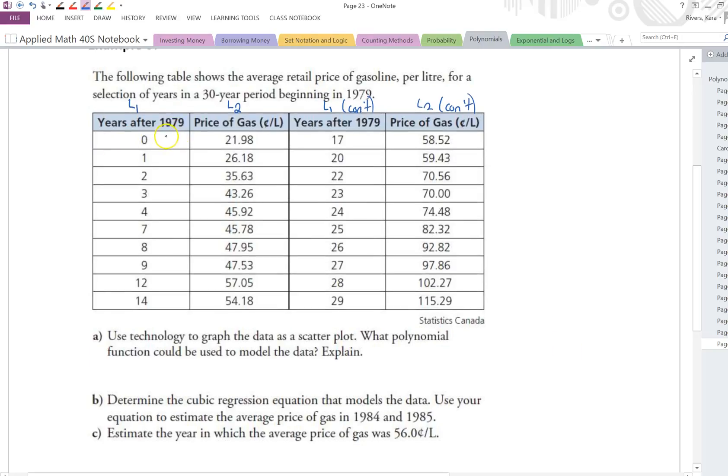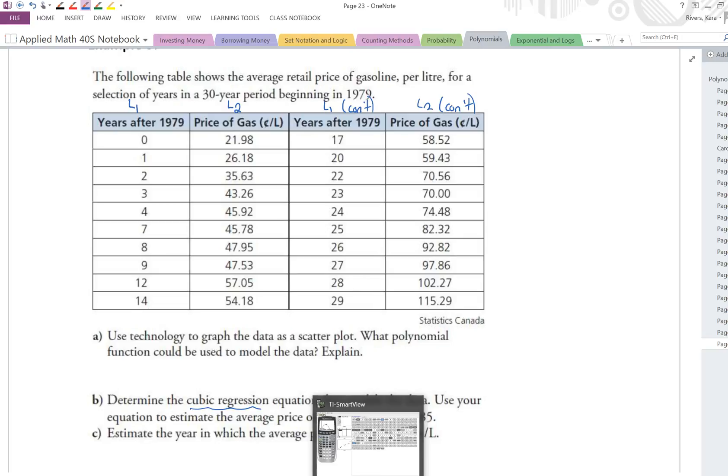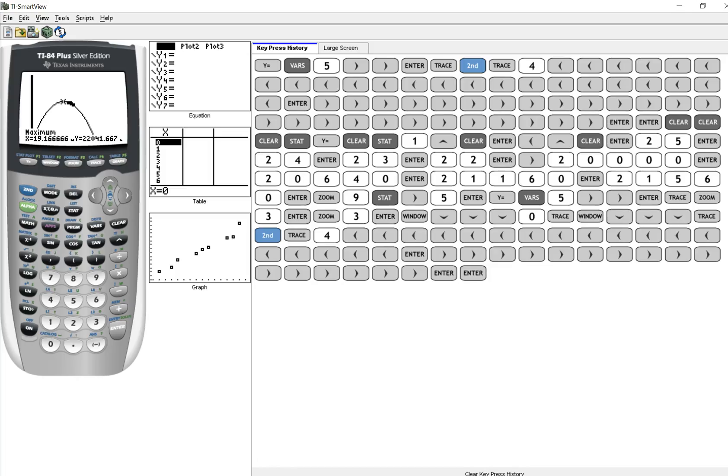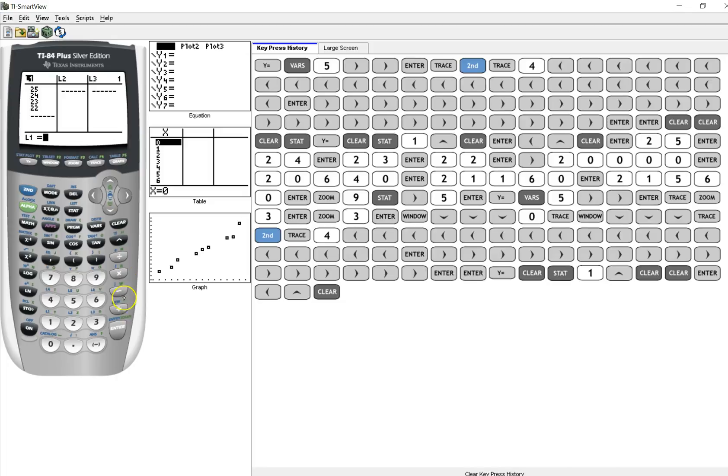So what is this example even asking us? It says the following table shows the average retail price of gasoline per liter for a selection of years in a 30 year period beginning in 1979. So we can see years after 1979 so when they say 0 that is 1979 when they say year 1 that's actually 1980, year 2, 1981 and so on. And it doesn't go, it goes 1, 2, 3, 4, 7, 8, 9, 12, 14, it's not all in order but like 20 means 20 years after 1979 so that would be year 1999, so when you're figuring this out make sure you keep that in mind. Use technology to graph the data as a scatter plot. What polynomial function could be used to model the data and explain why. Let's clear out what we have here for our quadratic. Stat 1, clear that out, and now we're at a point where we can put in that data. Go ahead take your time and do that and then come back to the video.